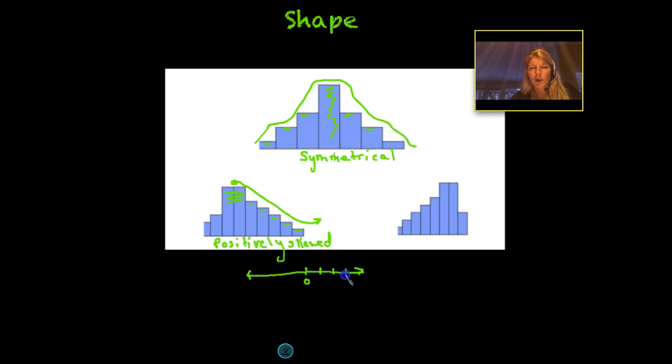And then you'd have some marks here, like one, two, and three. And then on this side, you would have negative one, negative two, and negative three. So if I look at which direction I'm going, I'm going towards the positive numbers. I'm getting bigger on the number line. And this is why we call this positively skewed.